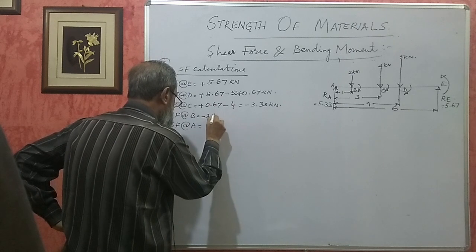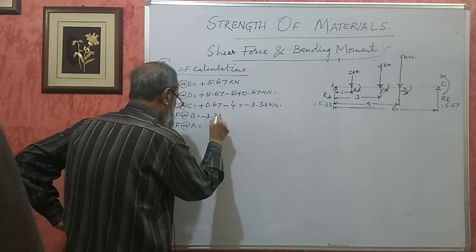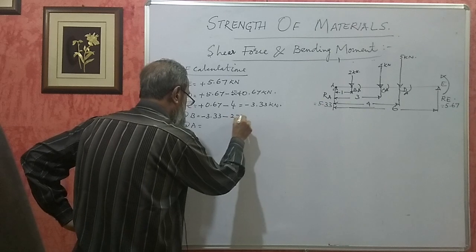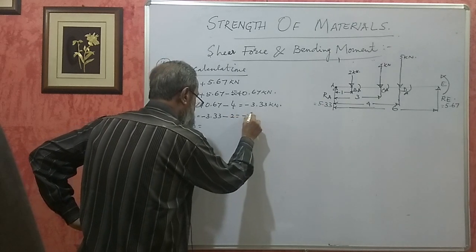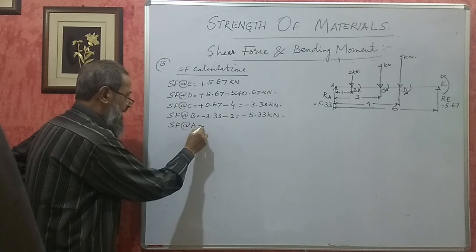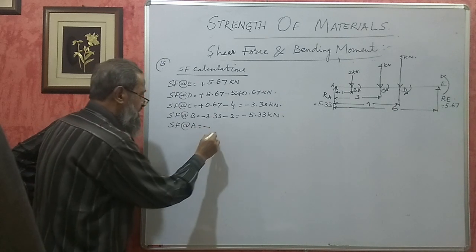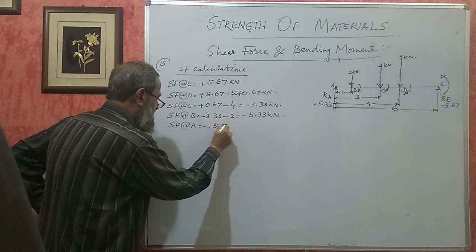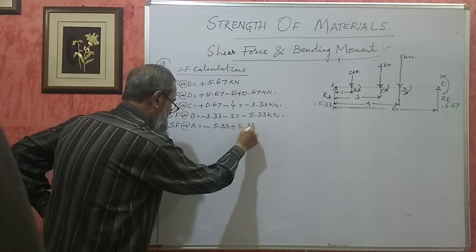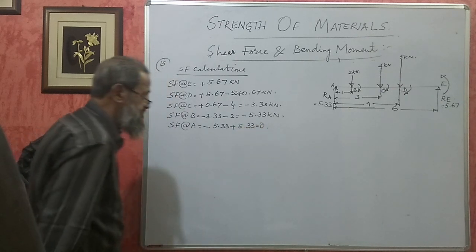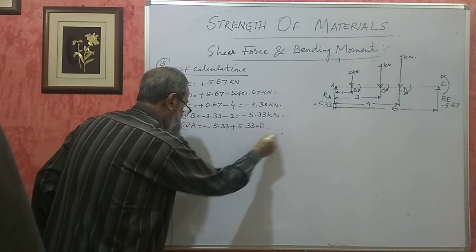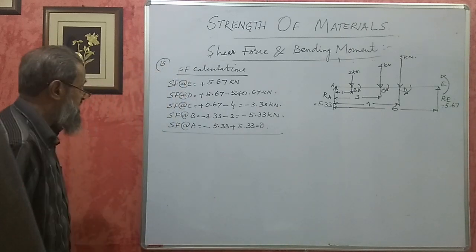Continuing from C: the balance is minus 3.33 minus 2, which gives minus 5.33 kilonewton at B. Then at A, minus 5.33 plus Ra (5.33) should become zero. This confirms our reaction values are correct. That completes the SF calculations.